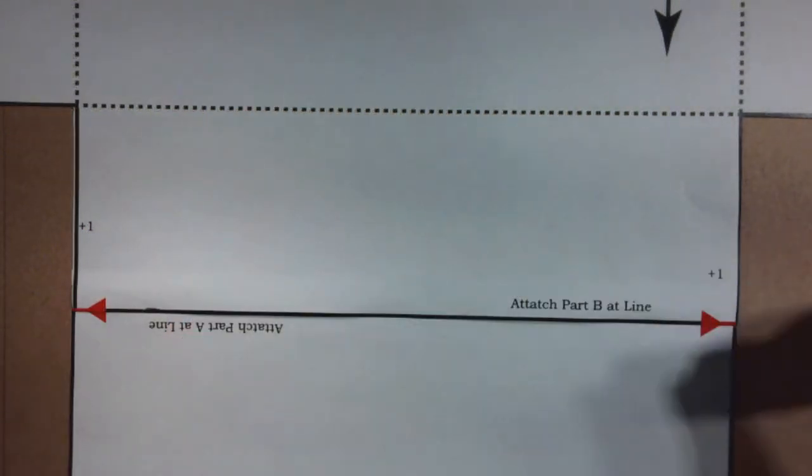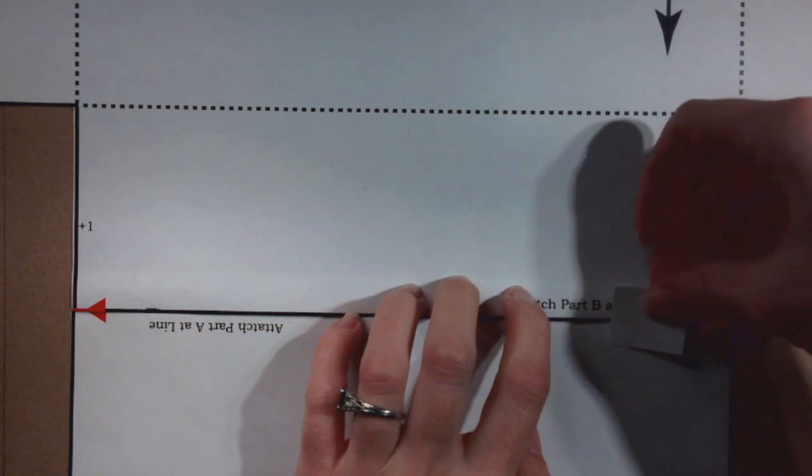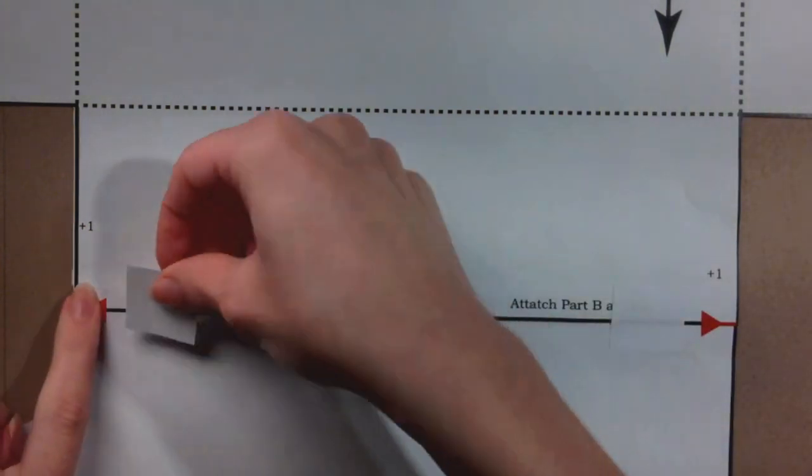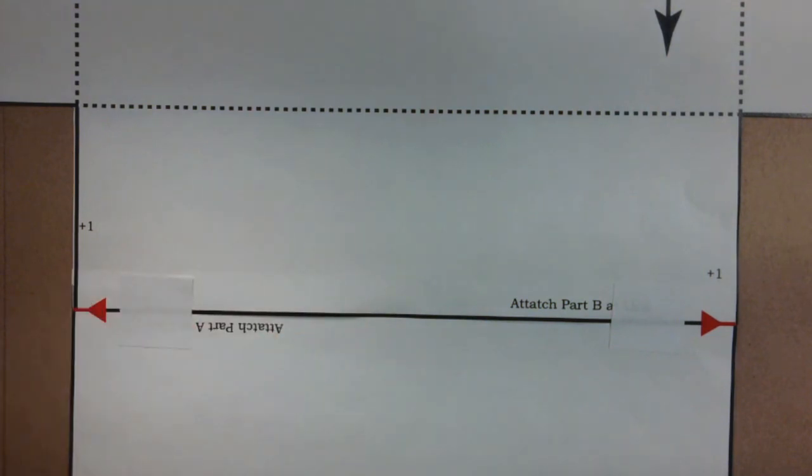Peel off the back of the small white adhesive label pieces and place over the join. Place one about one inch from each side as well as one in the middle.